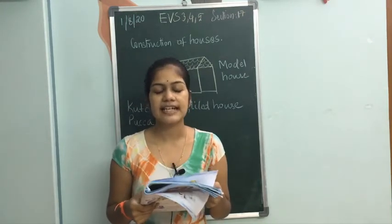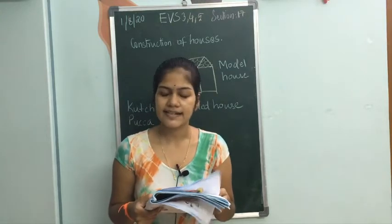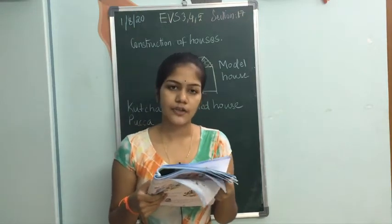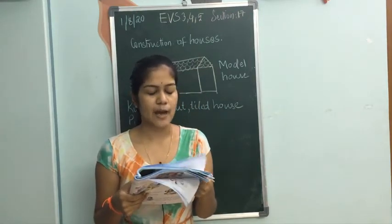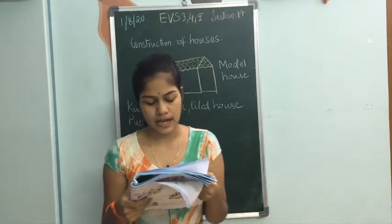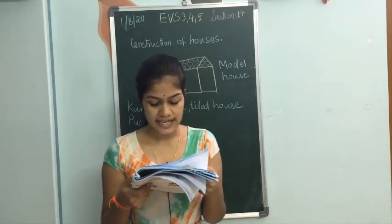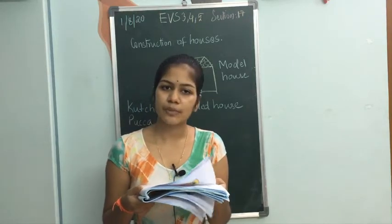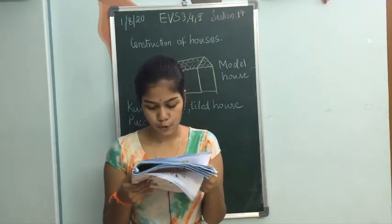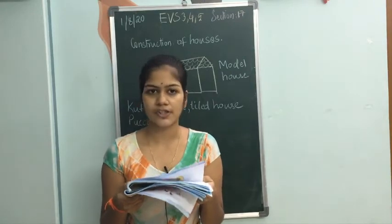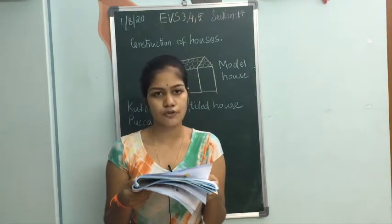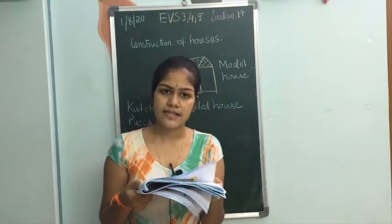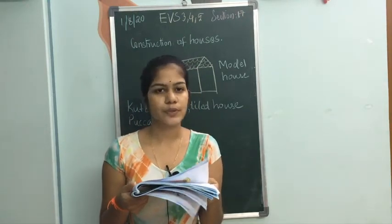Kacha houses are easily damaged by fire accidents and cyclones. True or false — we need less amount of money to build a hut. True. Buildings are easily damaged — no, buildings are not easily damaged. Doors and windows should be arranged to get fresh air and light. We should have a separate room to cook food, called the kitchen. We all have a kitchen in our house to cook food. We need the help of many people like masons, carpenters, and engineers to build a house.